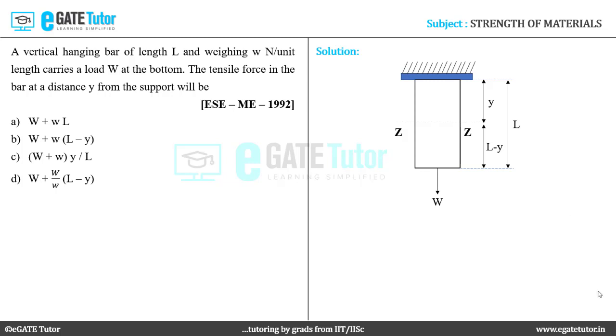Therefore, from this figure, we can write that the force at a distance Y from the support which is at the location section ZZ is equal to the load capital W carried by the bar at the bottom plus self-weight of the bar.